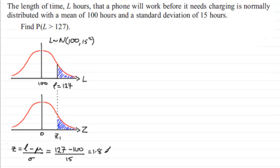So now that we've got Z equals 1.8, I can then just use tables to work out the probability that L is greater than 127, because this is exactly the same as working out the probability that Z is greater than our value for Z1, which is 1.8.